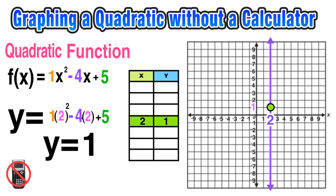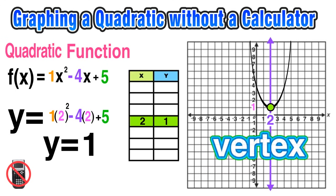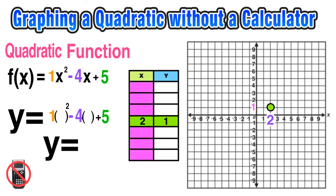To recap: we found the vertex by first using the axis of symmetry formula x equals negative b over 2a to find the x-value, then plugged that x-value into the original function to get the y-value. Now we know the parabola has a vertex at (2, 1) and have a better idea of the final graph. We still need to find the rest of the points, so for x-values I'll build above and below the vertex value.